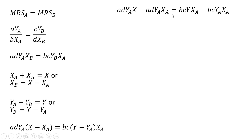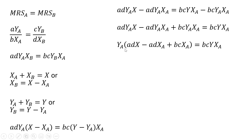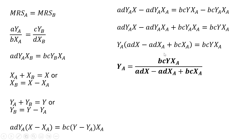I want to collect all the YA terms on the left-hand side, so I'm going to move the relevant term over. Then I'm going to factor out YA on the left-hand side, and finally divide through by what's in parentheses, and that will be our general solution for the contract curve.